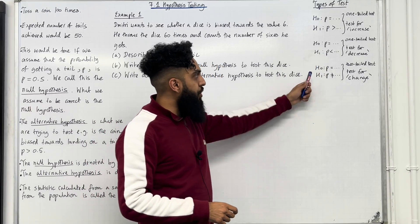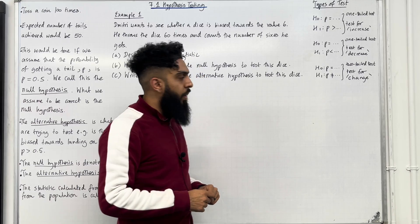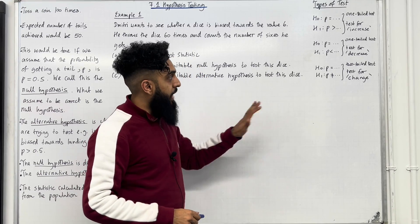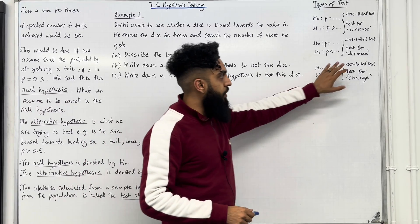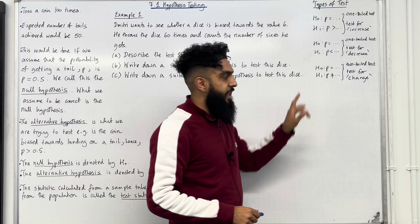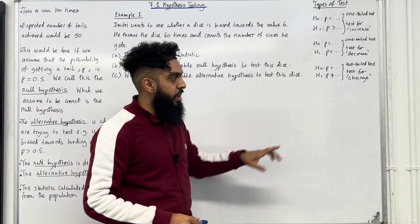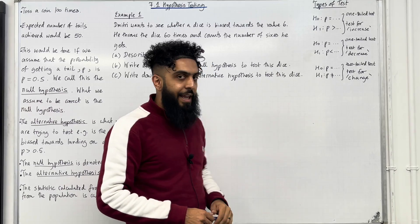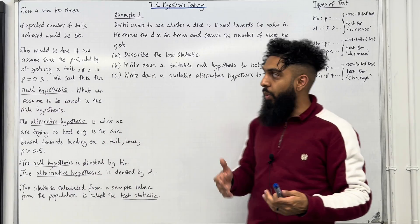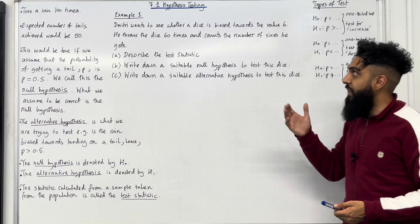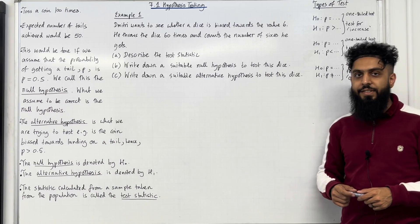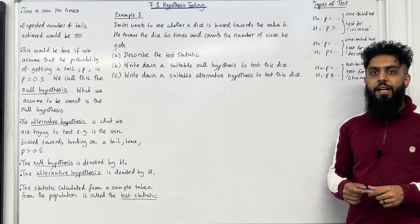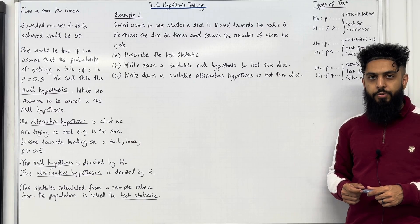Finally, we have H₀: P = [value], H₁: P ≠ [value]. This is a two-tail test — we are testing for a change in the proportion P. These are all the key facts of 7.1 hypothesis testing. I'll be implementing these key facts within examples.